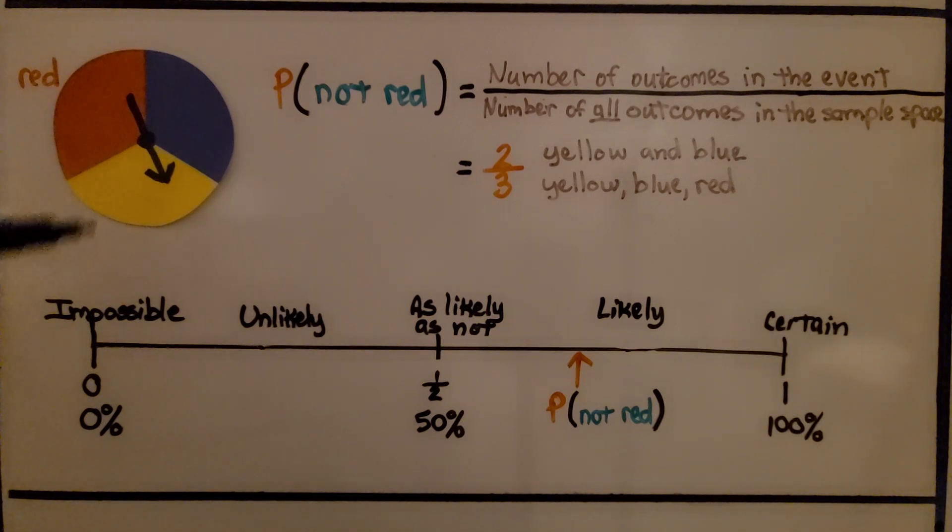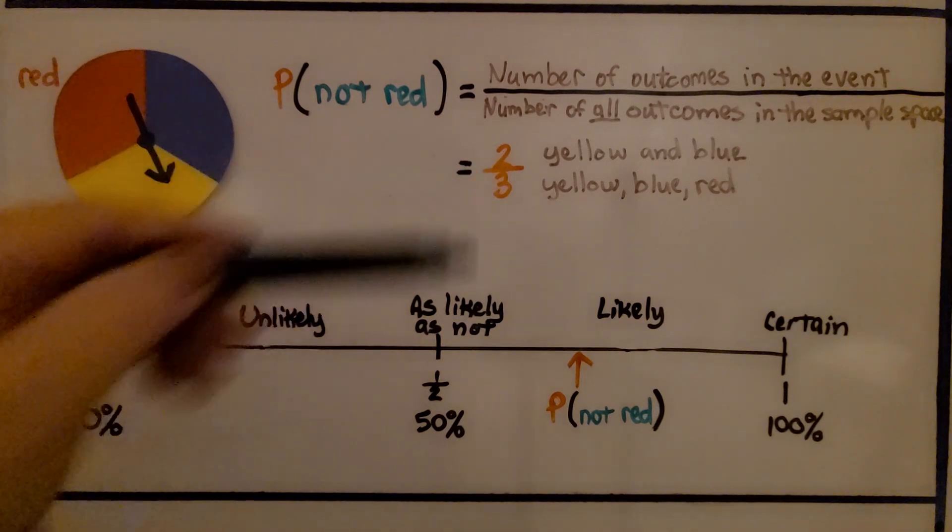Well, that would be blue and yellow. And the number of all the outcomes in the sample space is three. Yellow, blue, and red. It would be 2/3.